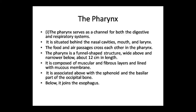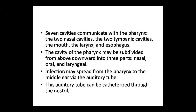The pharynx has muscular and fibrous layers with a mucous lining. It extends from the sphenoid bone and the basilar part of the occipital bone down to the esophagus. Seven cavities communicate with the pharynx: two nasal cavities, two tympanic cavities, the mouth, larynx, and esophagus. The pharynx cavity itself is divided into three parts: nasal, oral, and laryngeal.